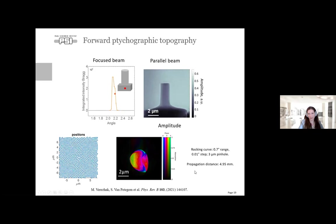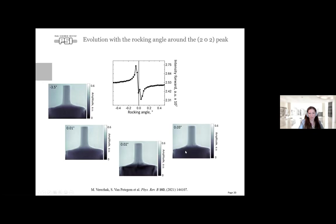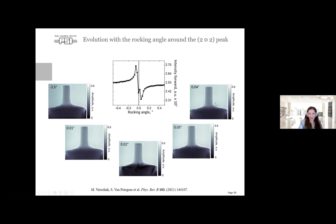We also reconstruct the pinhole simultaneously—in this case a 3-micron pinhole. In static images: three degrees away from the Bragg peak we have no dark features, no strain information. As we reach closer to the Bragg peak, dark features appear at the bottom half of the sample. You may ask why we see nothing at the top of the pillar, where compression would cause most deformation.